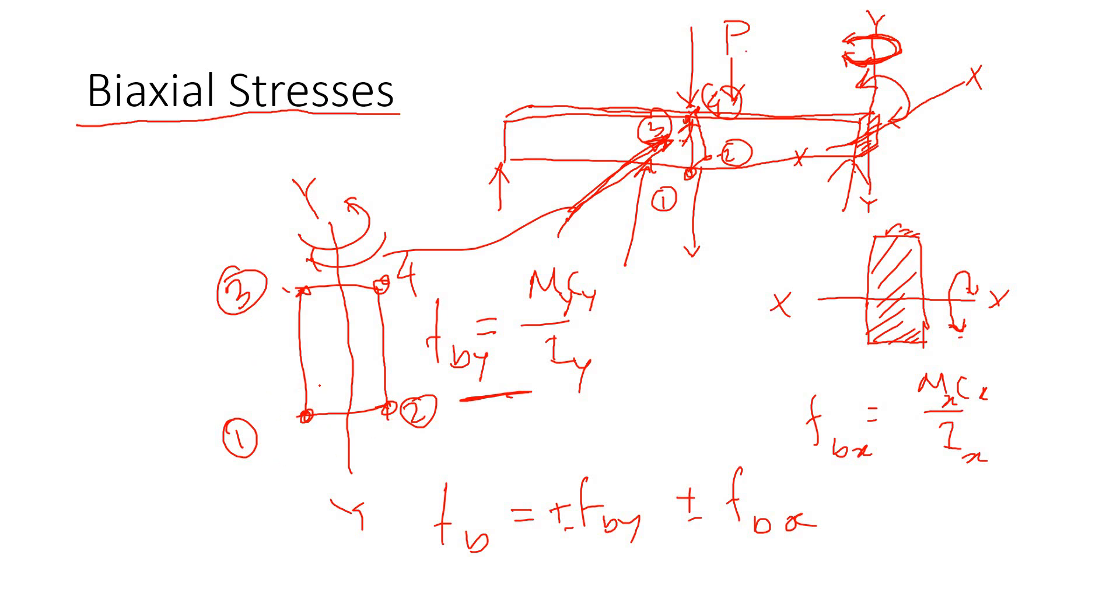If we're interested in point 1, what happens to it? Point 1, because of the y stress in the y direction, will be in compression. Compression is negative, F_BY. Then F_B along the x-axis, because of this P loading from the top, point 1 will be in tension. Tension is positive, F_BX. We'll have to manually calculate this.